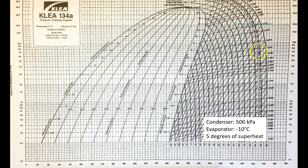We know the condenser is at 500 kilopascals, so I'm going to put a line at the 500 kilopascal mark. Since we are not told we have subcool in the condenser, we can assume this is an ideal condenser. Where the condenser line stops in a single-stage system is going to be the saturated liquid line — the condenser's entire purpose is to condense things, taking vapor and turning it into liquid. Once it's fully liquid, it leaves the condenser, which is why we stop at the saturated liquid line in an ideal system. So our condenser line stops right there on the saturated liquid line.